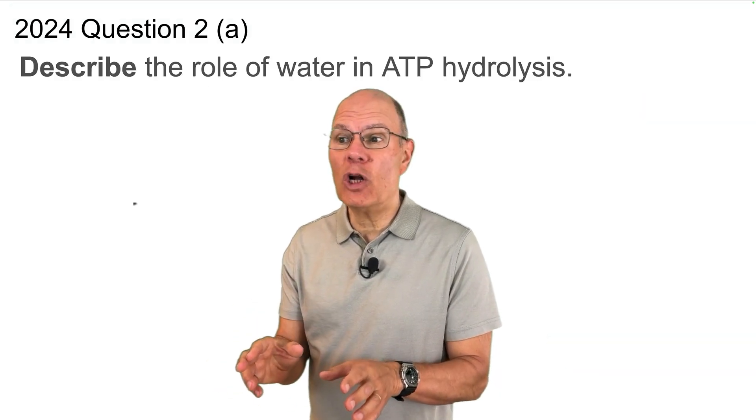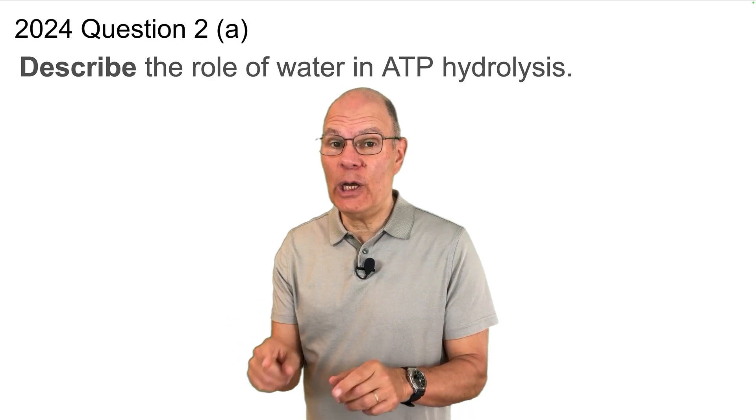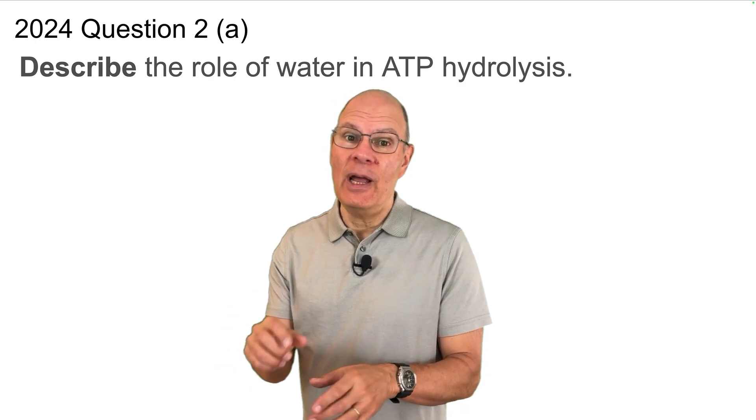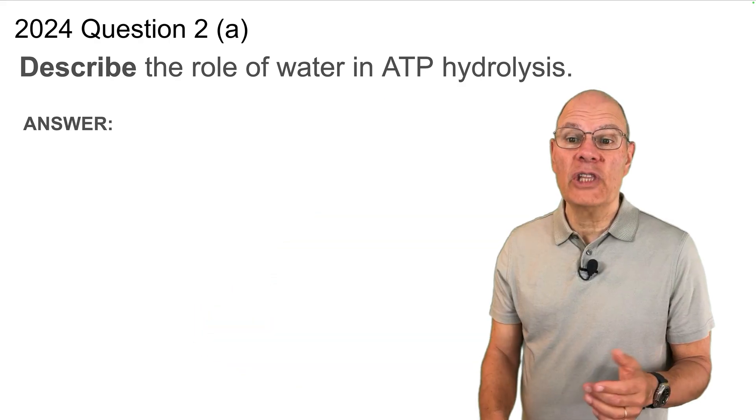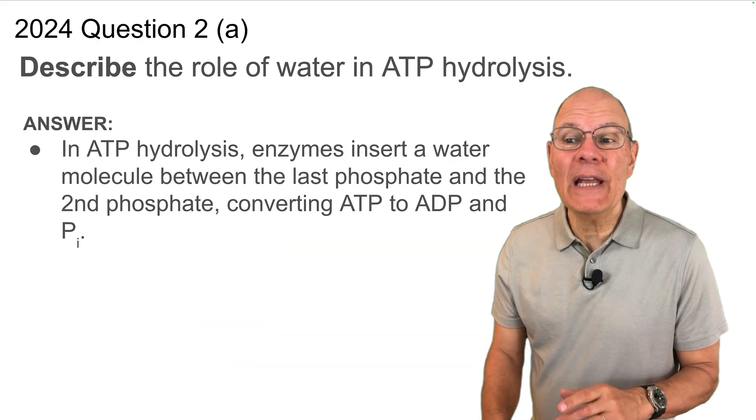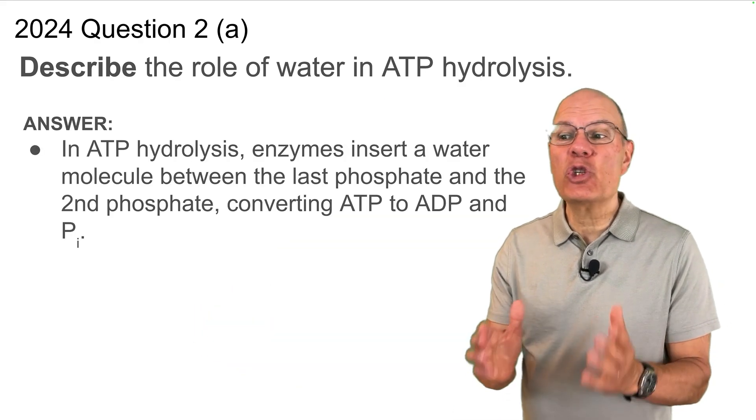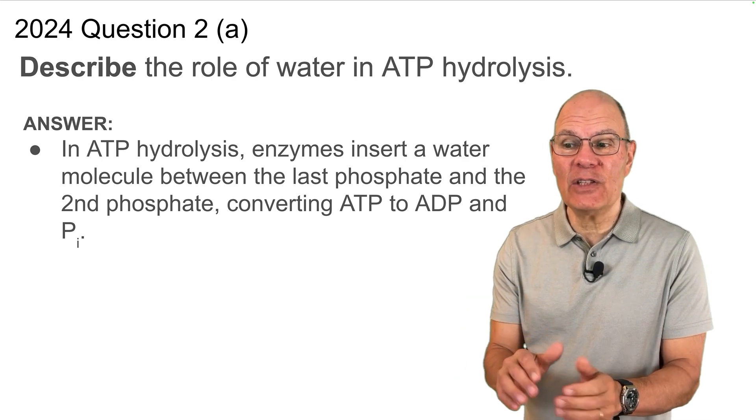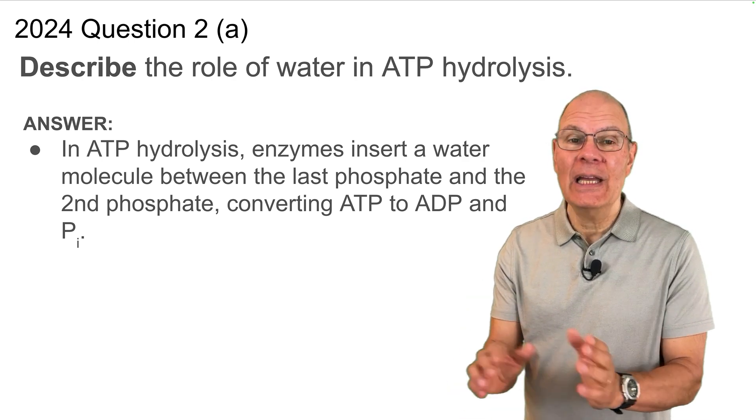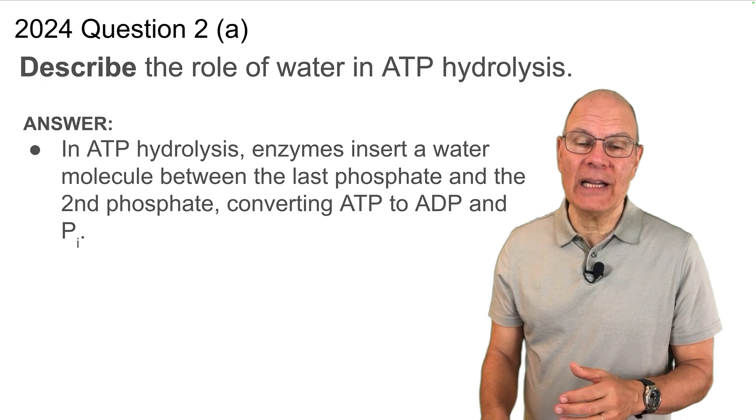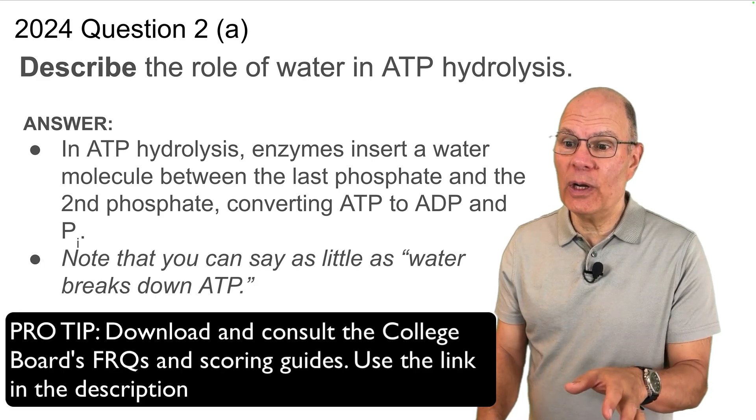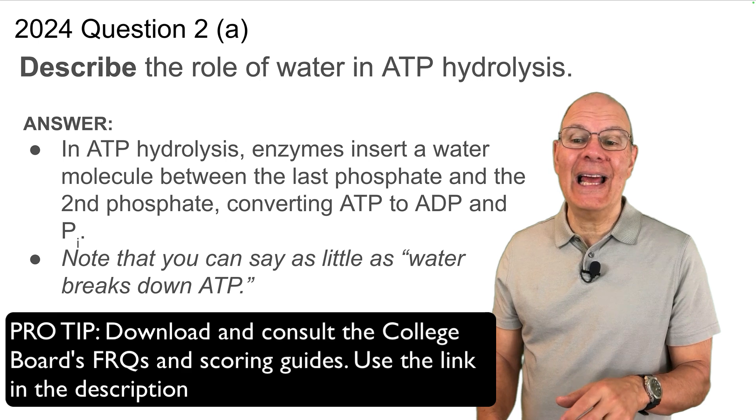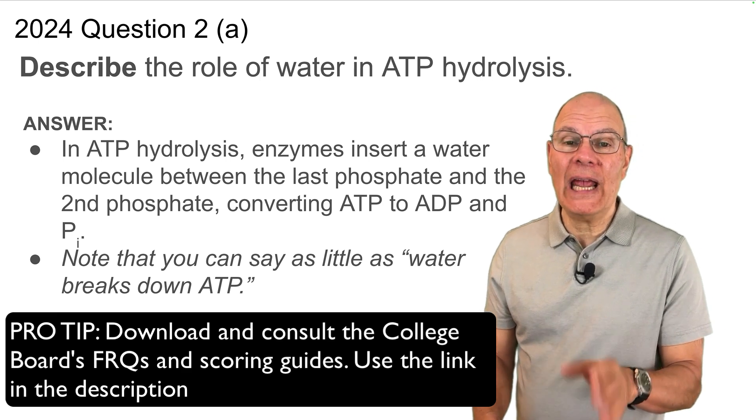Describe the role of water in ATP hydrolysis. Pause the video, write out your own answer. When you're done, hit play. Here's the answer. In ATP hydrolysis, enzymes insert a water molecule between the last phosphate and the second phosphate, converting ATP to ADP and inorganic phosphate. Note that if you look at the scoring guide, you can say as little as water breaks down ATP.